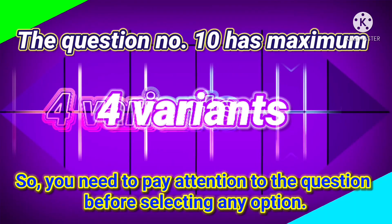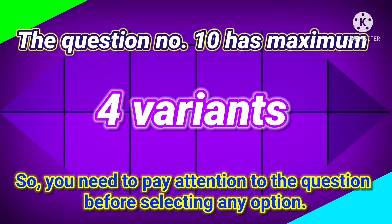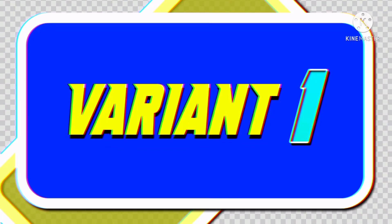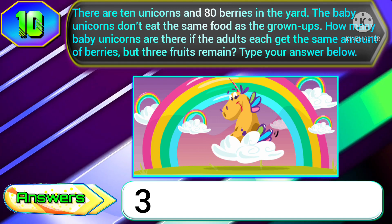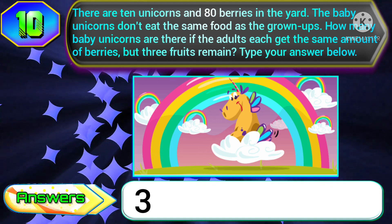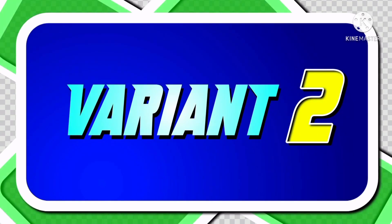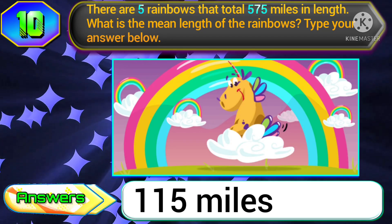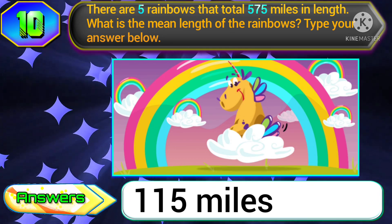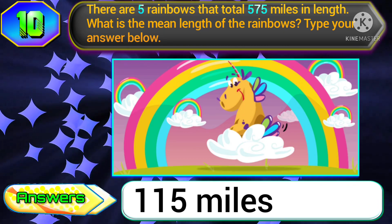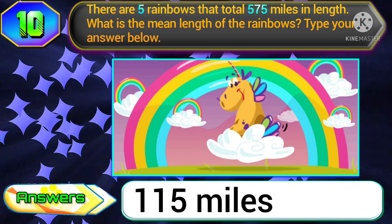Question number ten has maximum four variants, so you need to pay attention to the question before selecting any option. In variant one, if your question starts as: there are 10 unicorns and 80 berries in the yard — the answer will be 3. In variant two, if the question comes as: there are five rainbows that total 575 miles in length — what is the mean length of the rainbows? The answer is 115 miles.